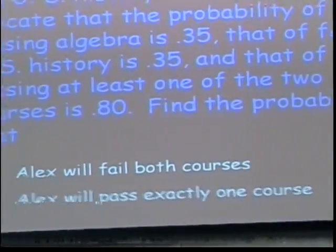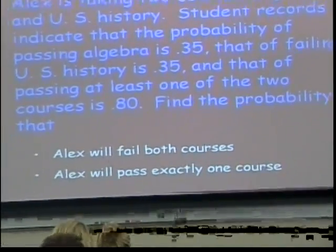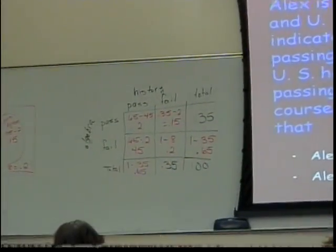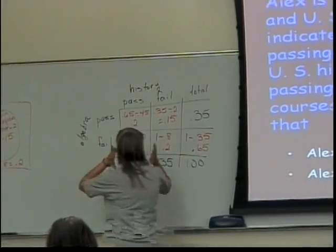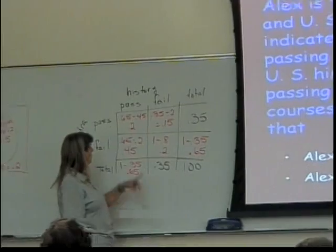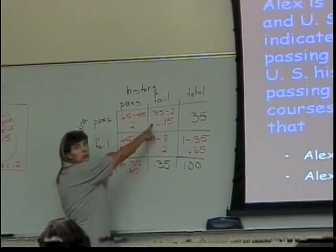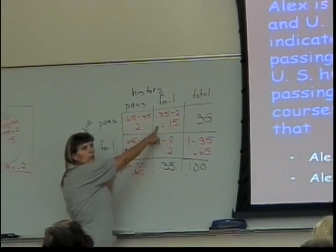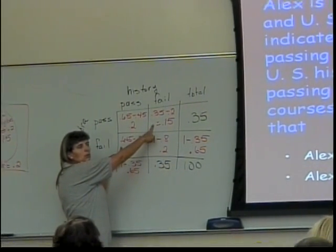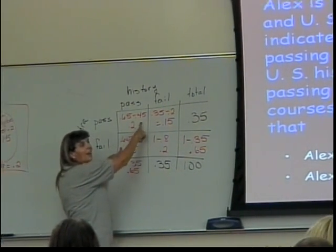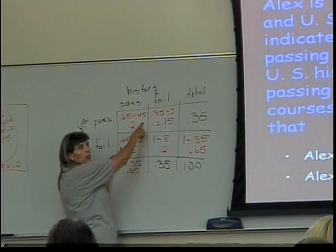And then, the final question. What's the probability that Alex will pass exactly one course? Where is that in my table? These two? In those two spots, does he pass exactly one course? I think this one too? It says exactly.